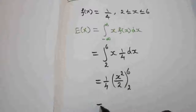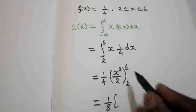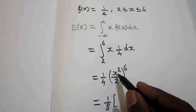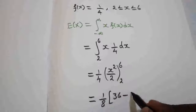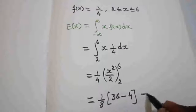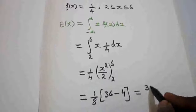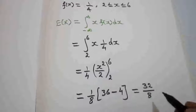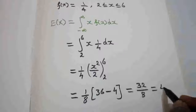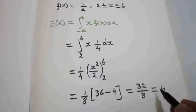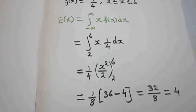Taking 2 outside gives 1/8. Substituting the upper limit: 6² = 36. Minus the lower limit: 2² = 4. So 36 − 4 = 32, giving 32/8. Cancelling, 8 fours are 32, so E(x) = 4. The expectation of x is 4.